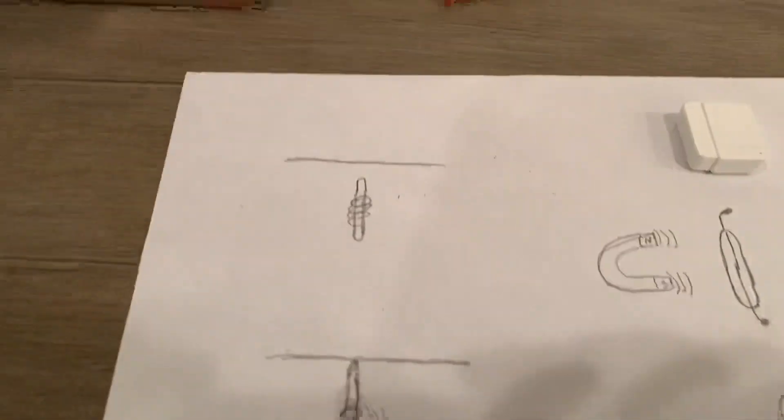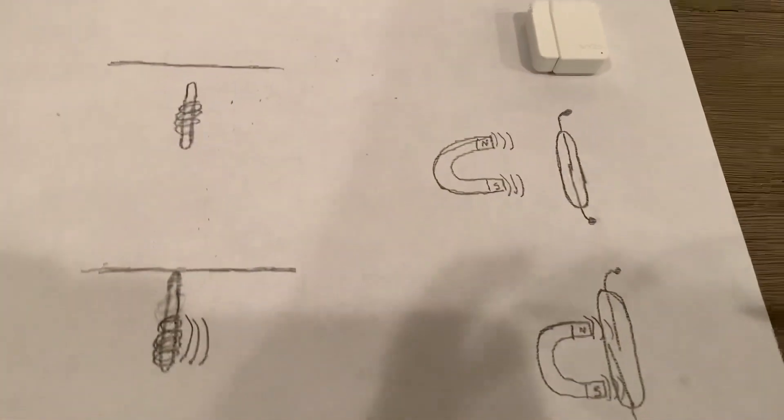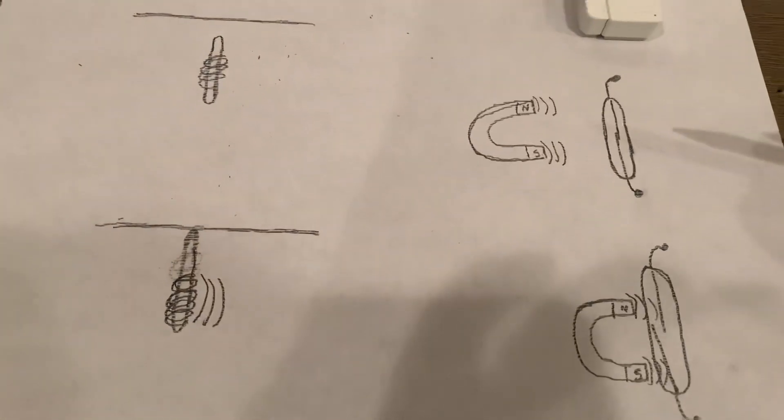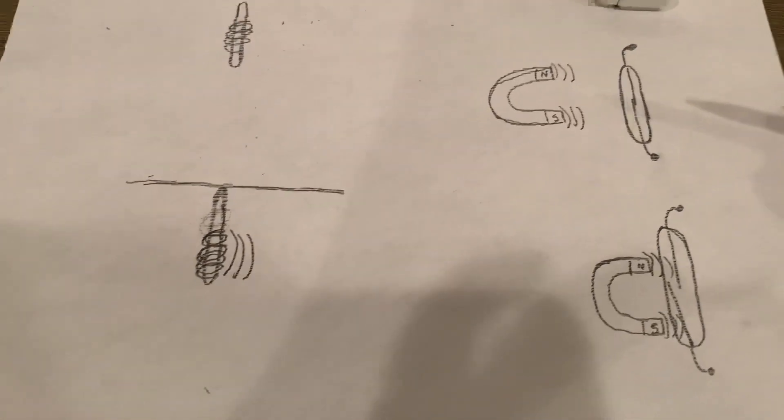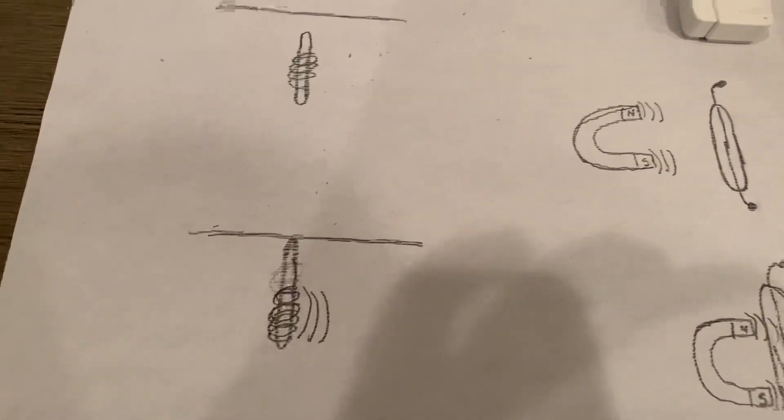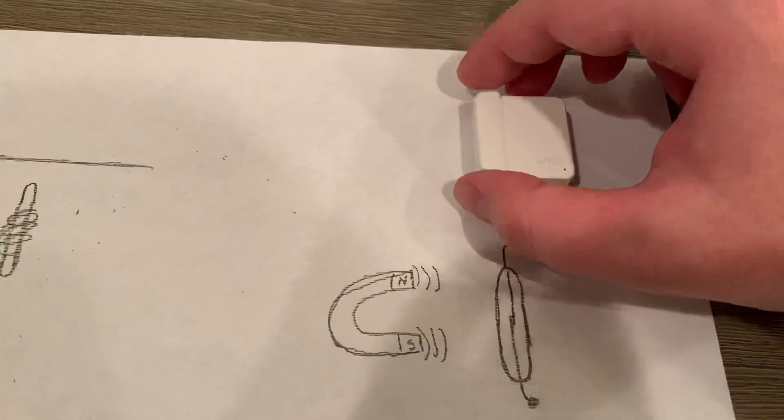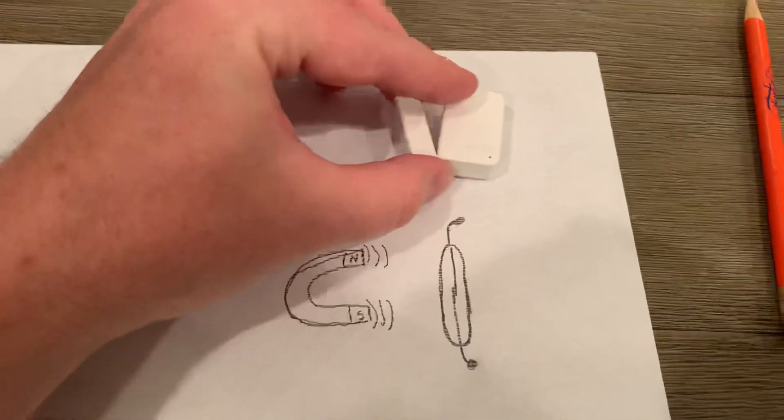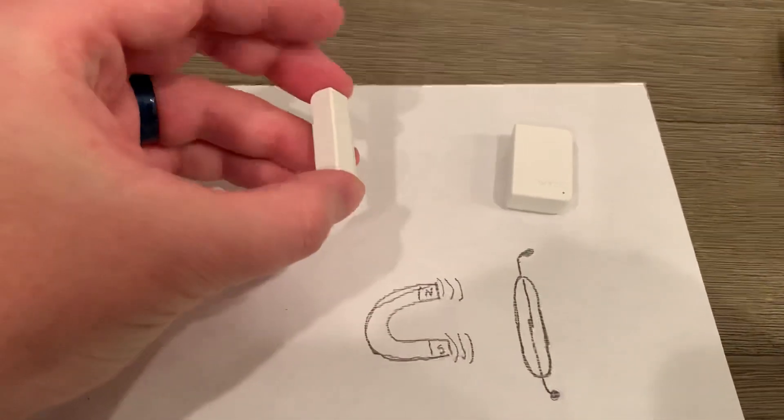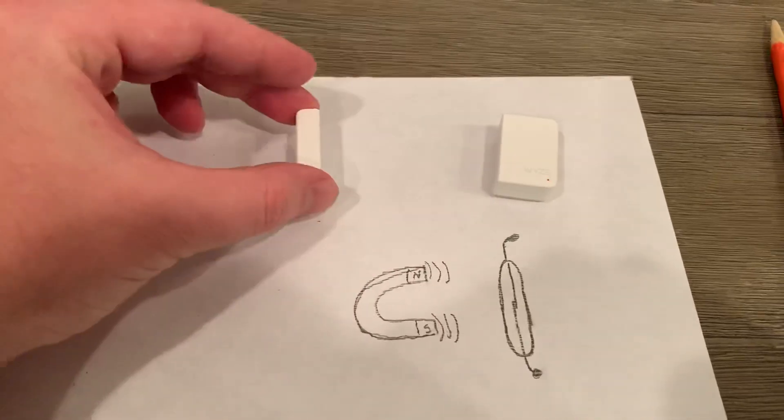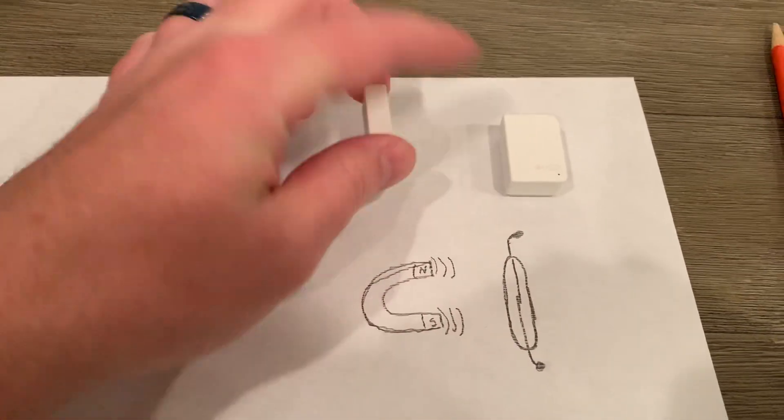I'll explain how this works so you can find other creative uses for the Wyze sensor. Basically, inside a Wyze sensor you have a magnetic reed switch. The left side here is just a magnet, and as it gets close you can see a little light blinking.